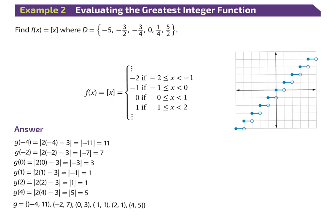Greatest integer means the greatest integer closest to that particular number. For negative two, it's negative two inclusive up to negative one. In a step function: if I'm at negative two, my y value is always negative two all the way up to negative one. Then at negative one, I'm negative one all the way up to zero. You can have a bottom or top bracket on these steps.